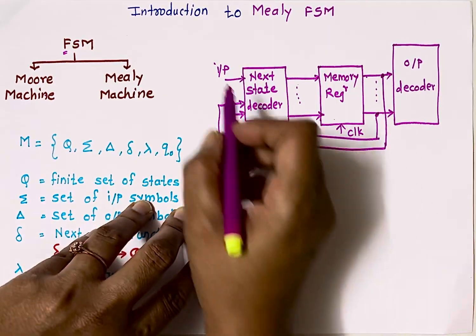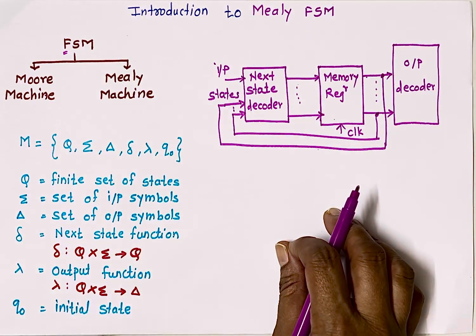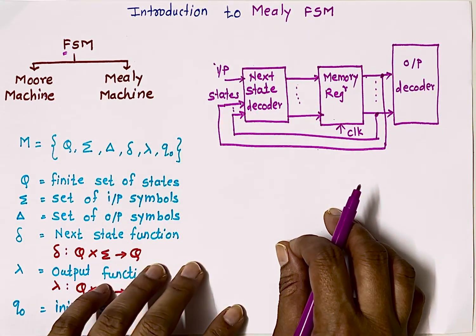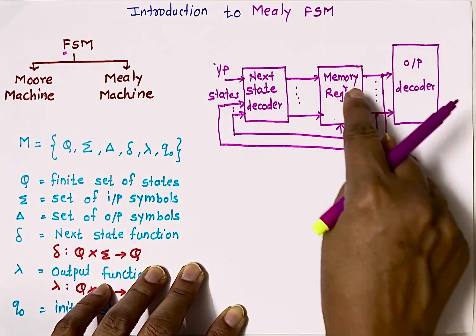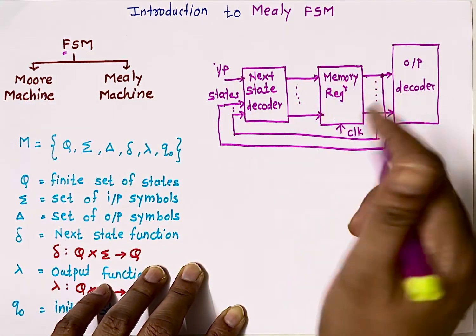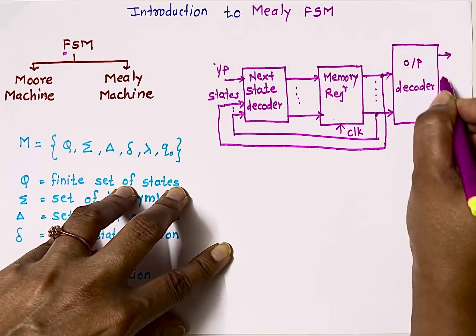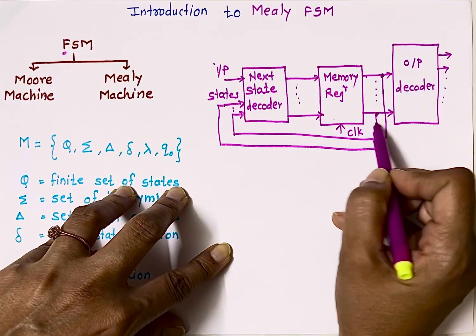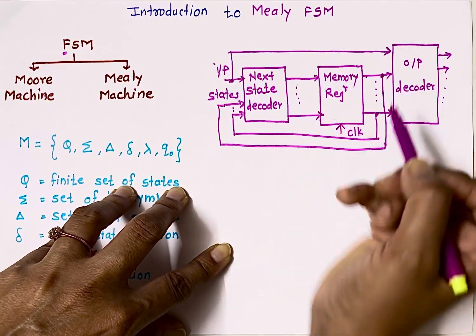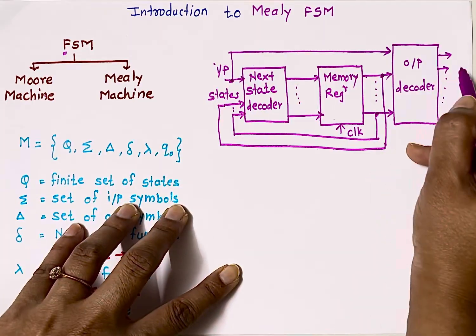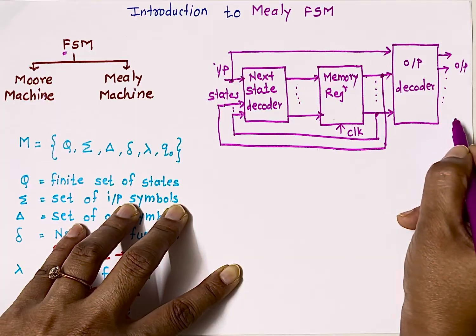These are called states and these are external inputs. The key difference: in Moore machine, output depends on present state of memory elements only, but in Mealy FSM, the final output depends on present state as well as present external input. You need to remember this basic difference.